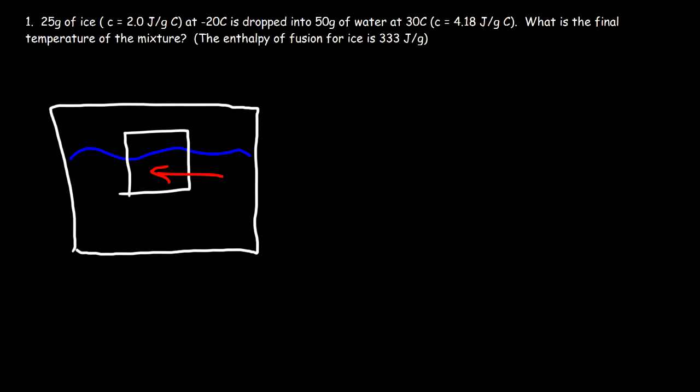The temperature of the water is going to decrease from 30 to some value, and the temperature of ice is going to increase from negative 20 to some number. Now, chances are some of the ice is going to melt. We don't know how much or if all of it is going to melt. If some of the ice melts at equilibrium, then the final temperature has to be zero. If all of the ice melts, then the final temperature is going to be above zero degrees Celsius.